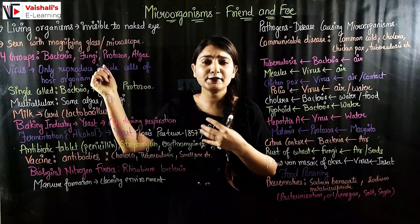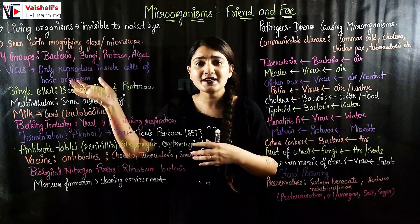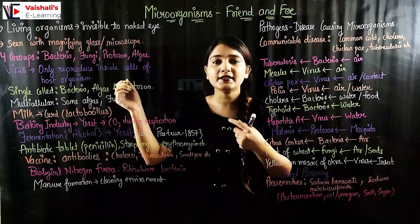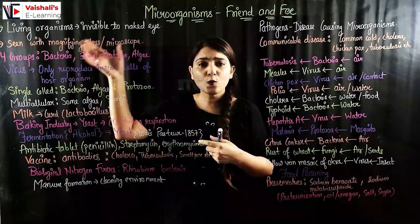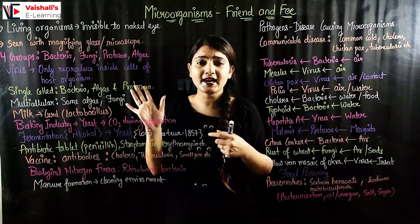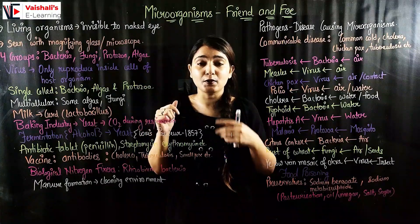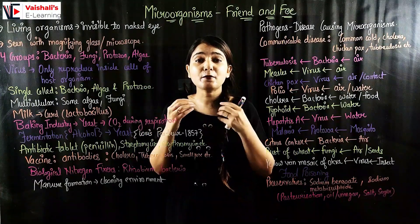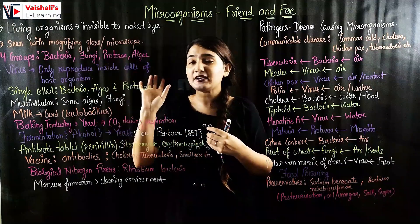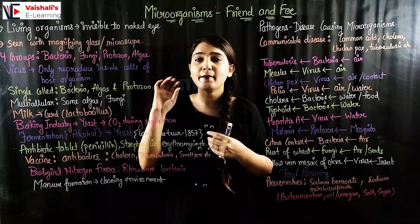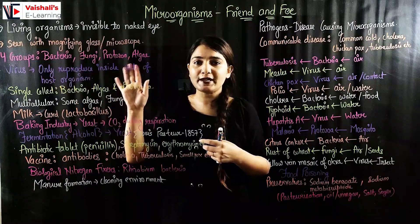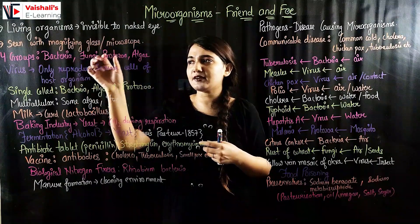Microorganisms have the ability to reproduce, just like humans, animals, and plants. We can see them with the help of a magnifying glass or a microscope. Some microorganisms are so very small that they are not visible even with a magnifying glass — we have to use a microscope only. We have four groups of microorganisms: bacteria, fungi, protozoa, and algae.